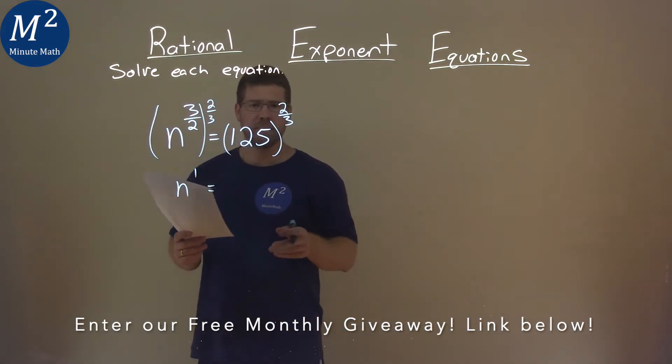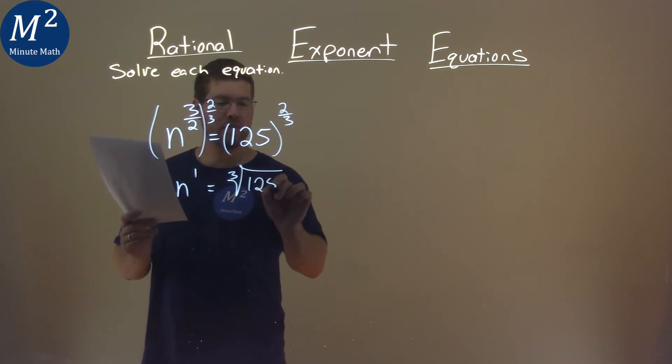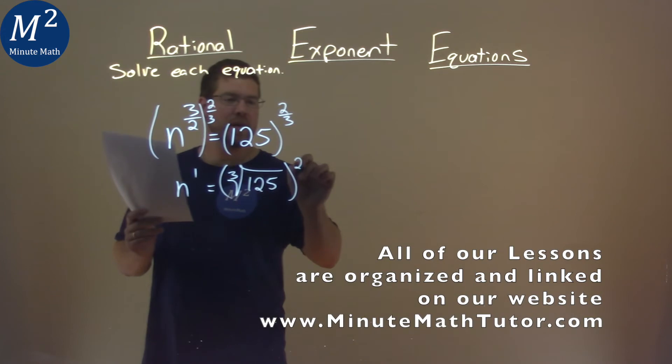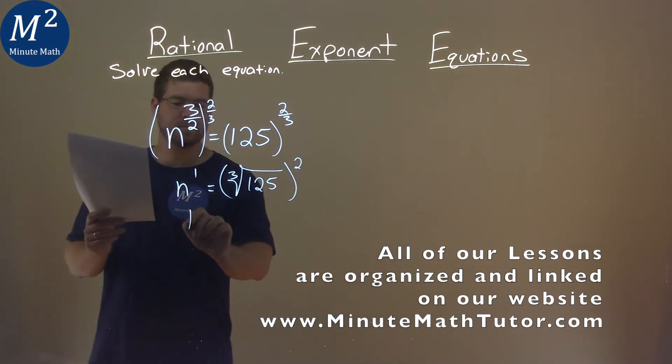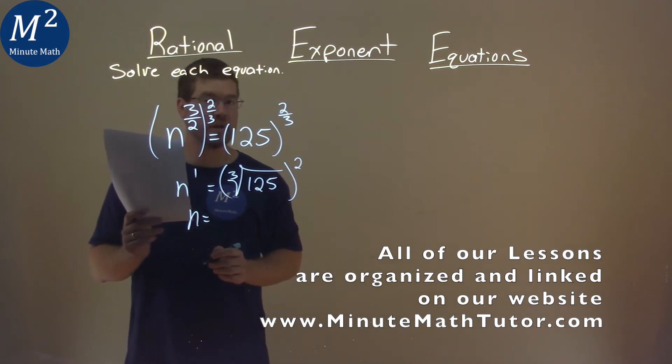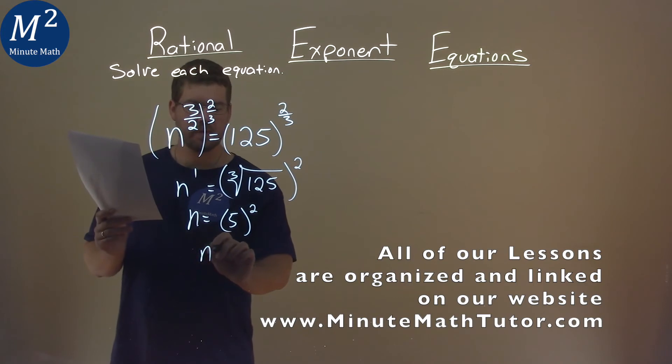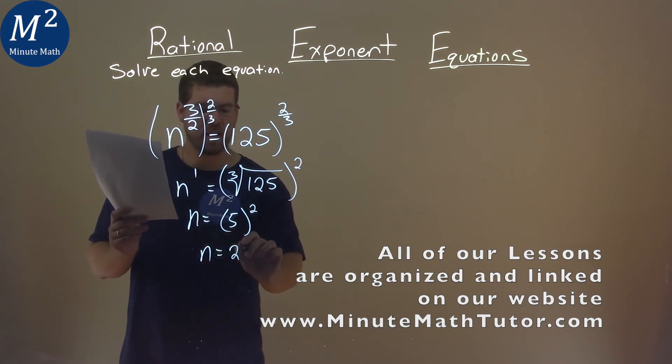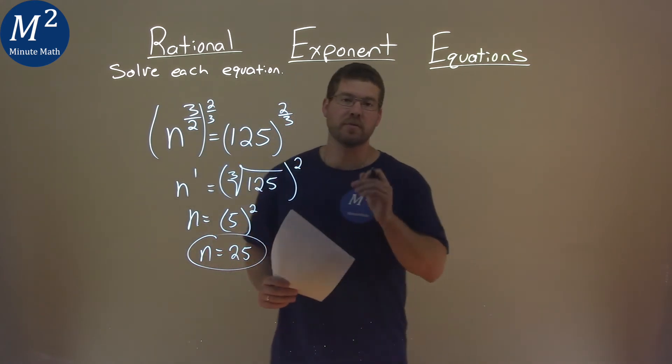On the right, the two-thirds power is the same thing as the third root of 125, and we take all of that and we square it. So let's keep on going. n equals the third root of 125 is 5. And we square that, and 5 squared is 25. And so my final answer here is n equals 25.